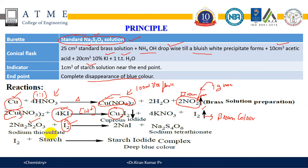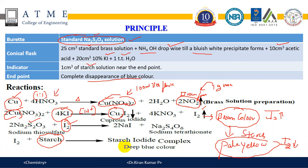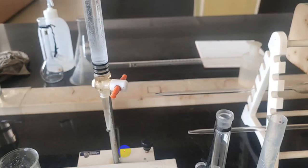The end point is determined using a freshly prepared starch indicator, which is added near to the end point — not initially. The solution will be dark brown initially. When the iodine concentration decreases to pale yellow, that indicates iodine concentration is less — add starch indicator at that point. When starch indicator is added, the solution becomes deep blue color. Titrate again until the blue color completely disappears and there is no change in color.